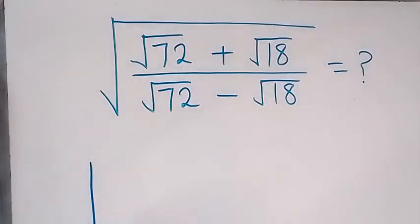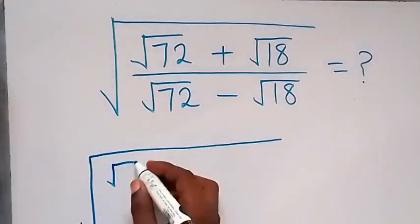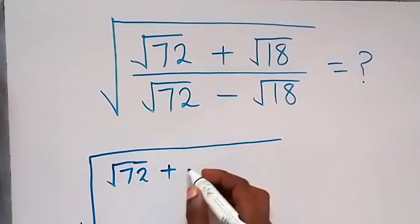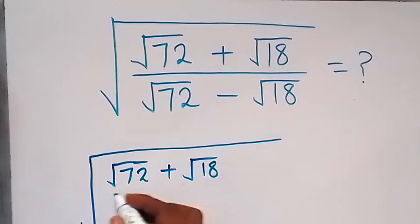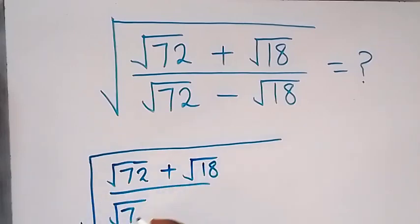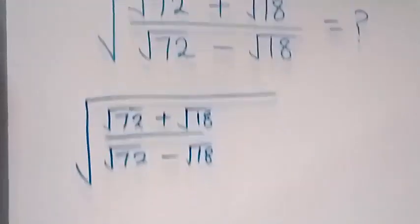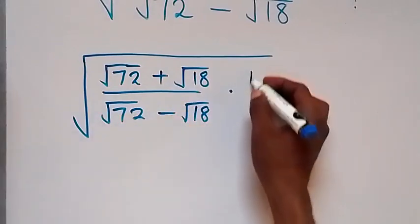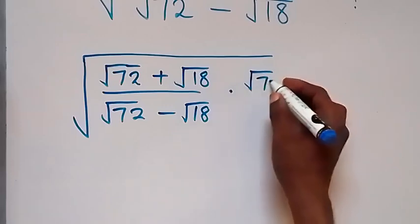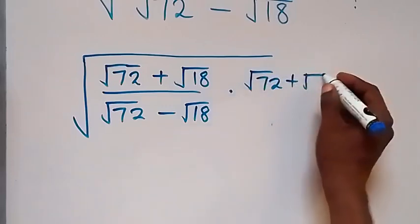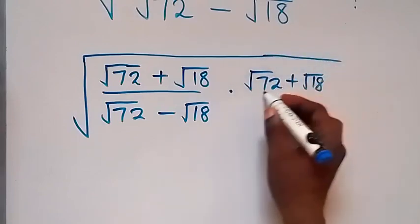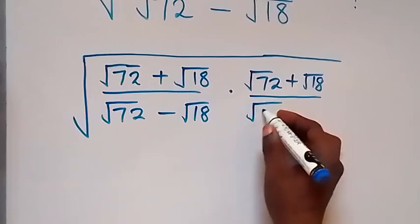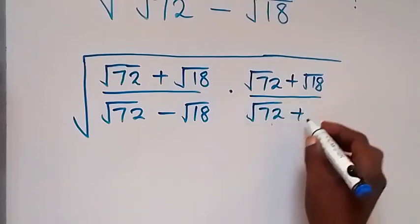From here we can rationalize what we have there. That is, we have root 72 plus root 18 divided by root 72 minus root 18. And when we rationalize this, we multiply and divide by the conjugate of the denominator, which is root 72 plus root 18. Then also we divide by root 72 plus root 18.